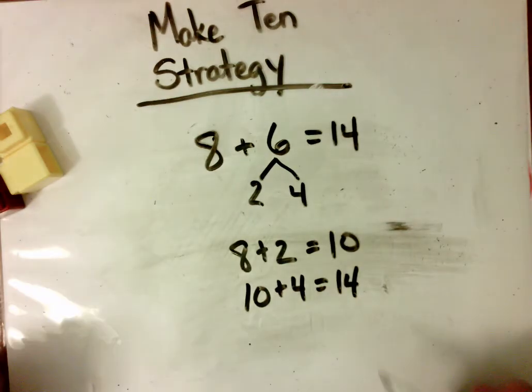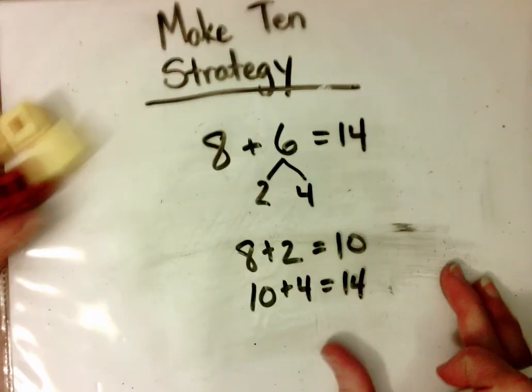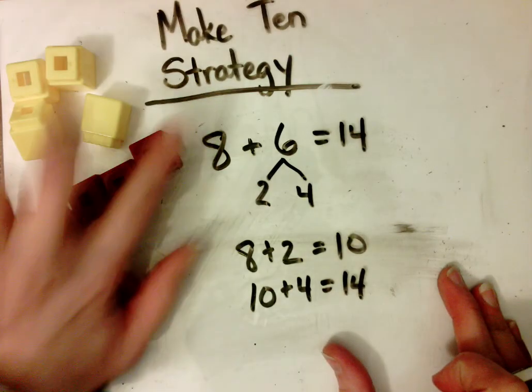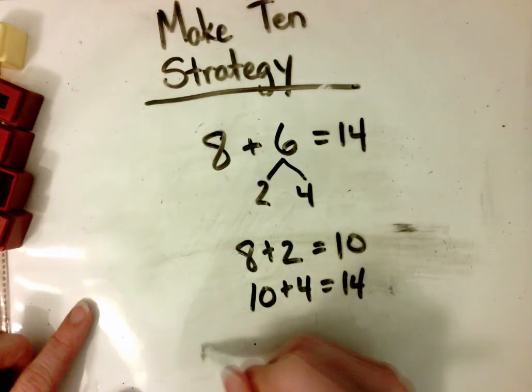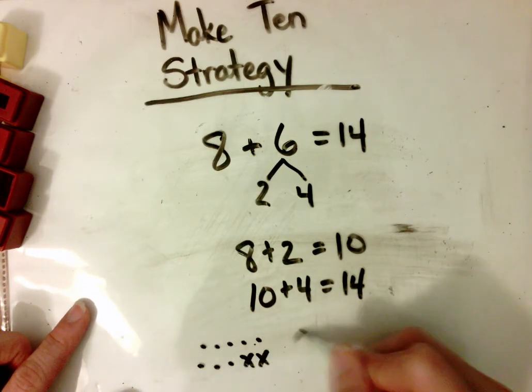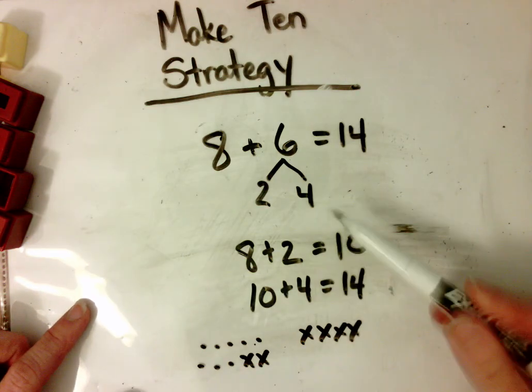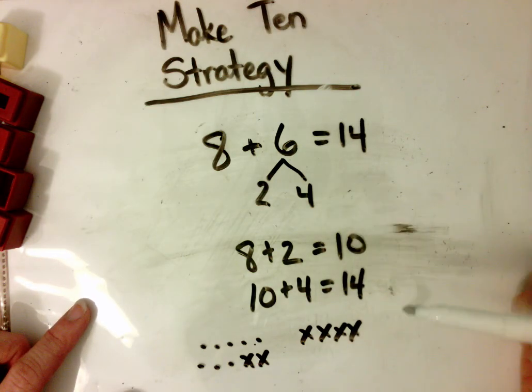Those are some of the different ways you might see the make 10 strategy. Concretely, using our cubes. Pictorially, when we draw. And then using our number bonds to record the process we used to make 10.